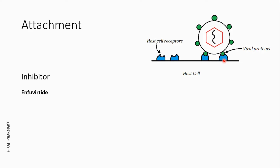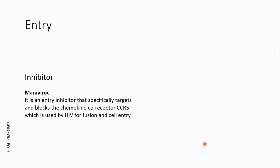You can see I have drawn the host cell receptor in blue. These receptors bind with the viral proteins and cause the attachment of the virus. In order to prevent infection, we can inhibit this attachment step using inhibitors. A common example is enfuvirtide.